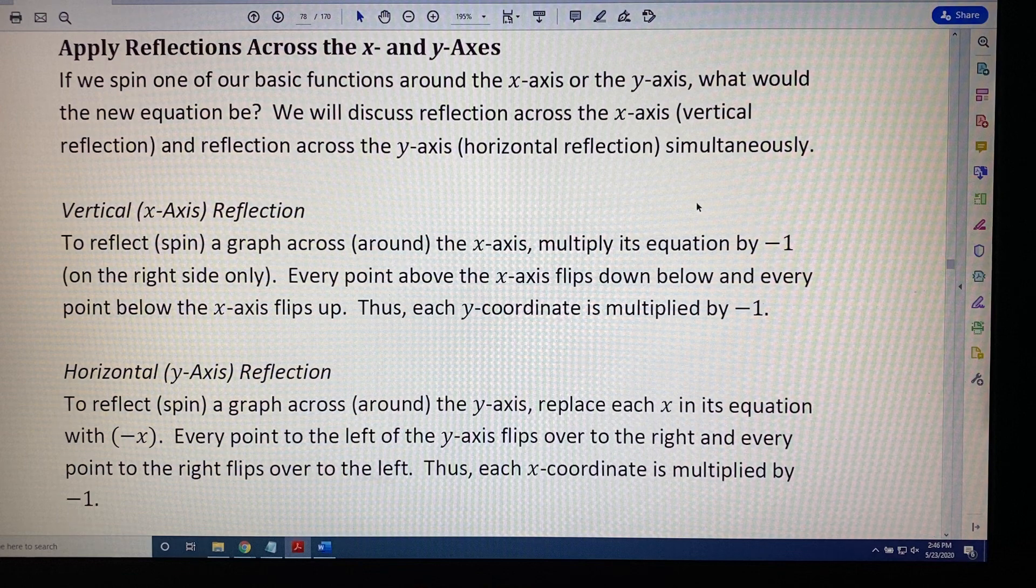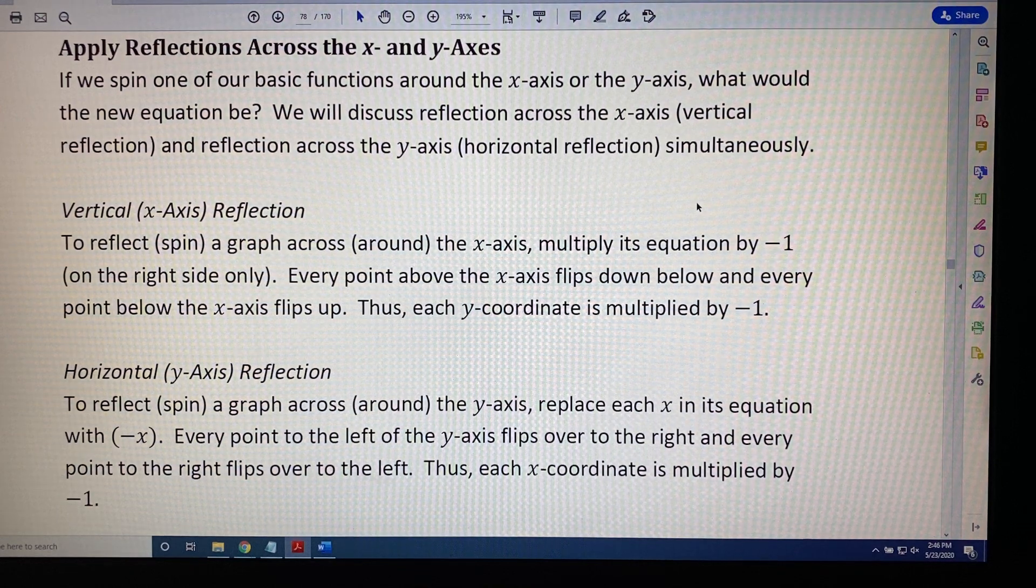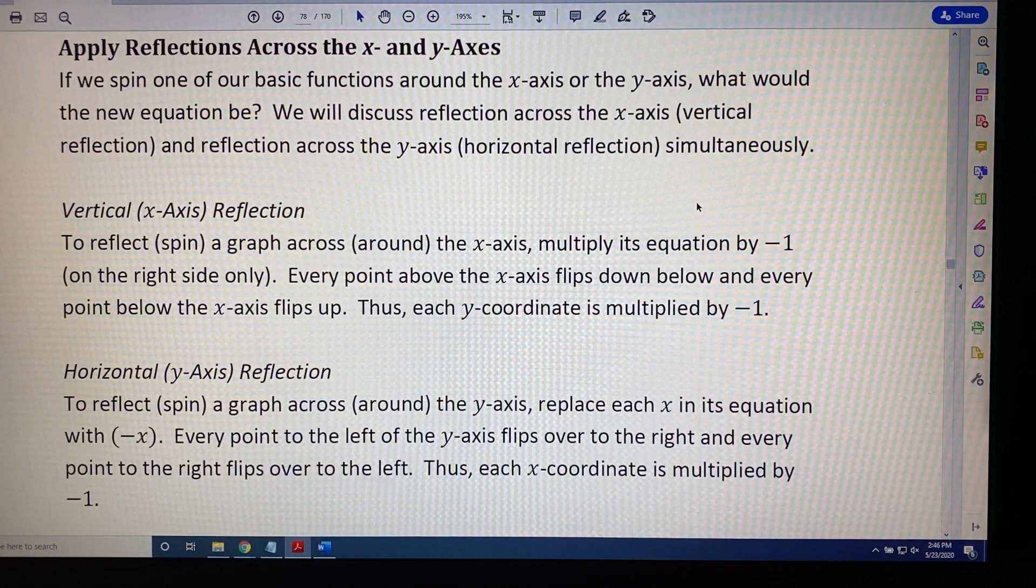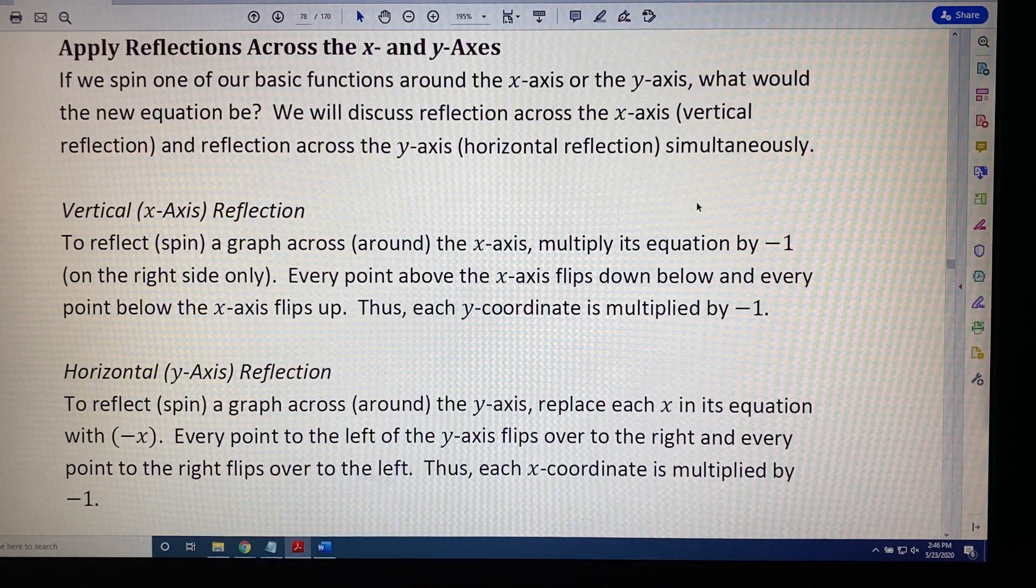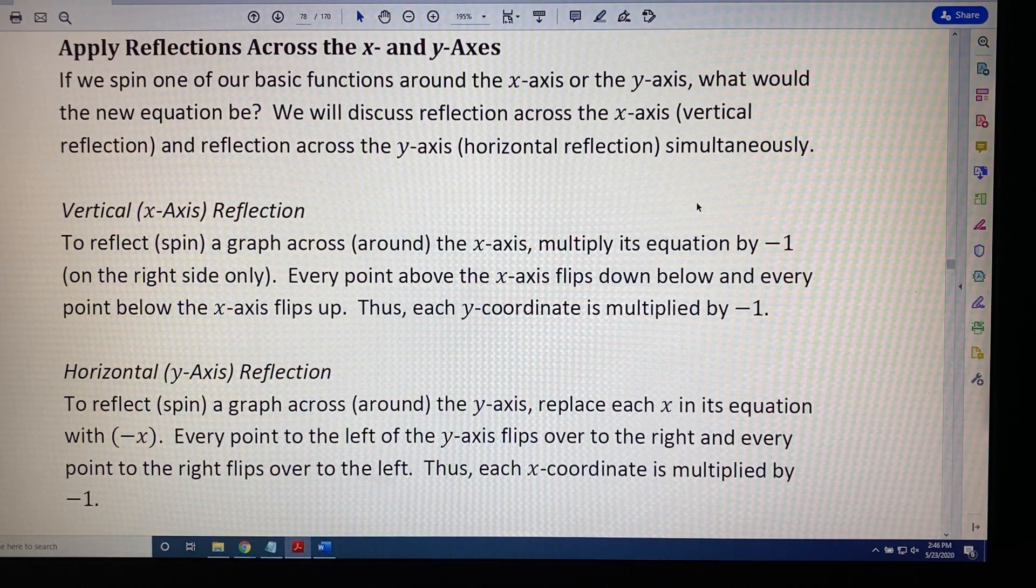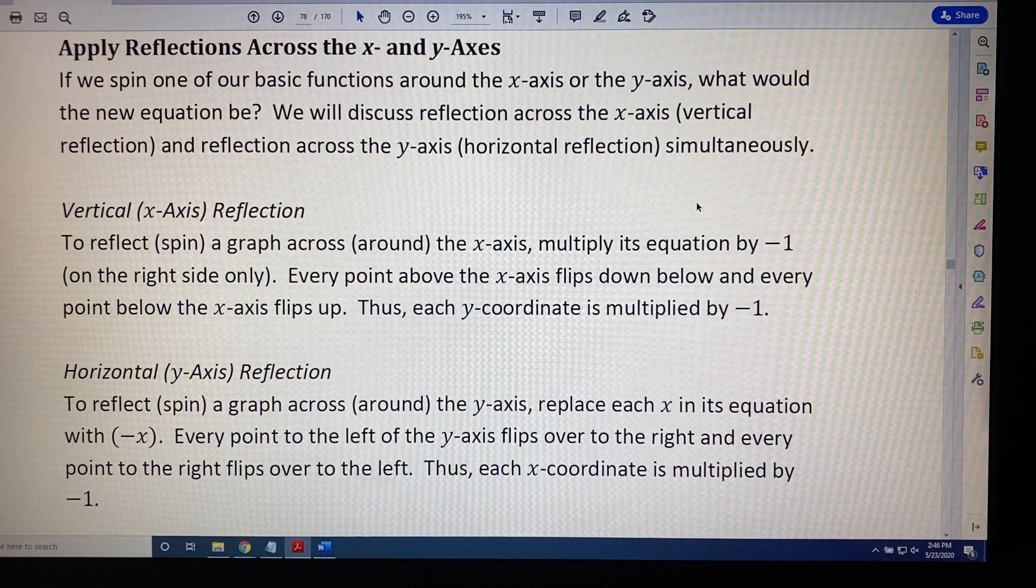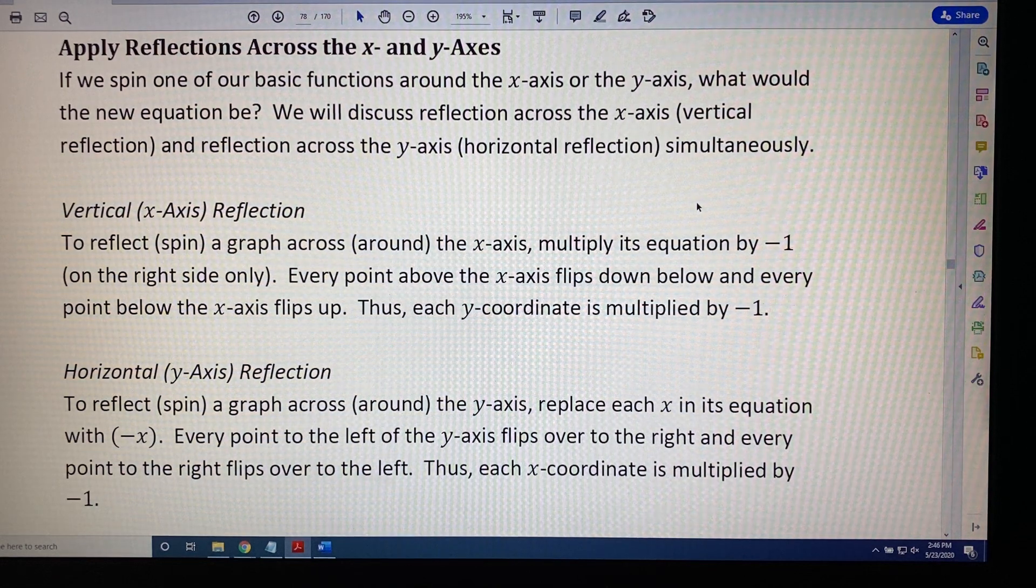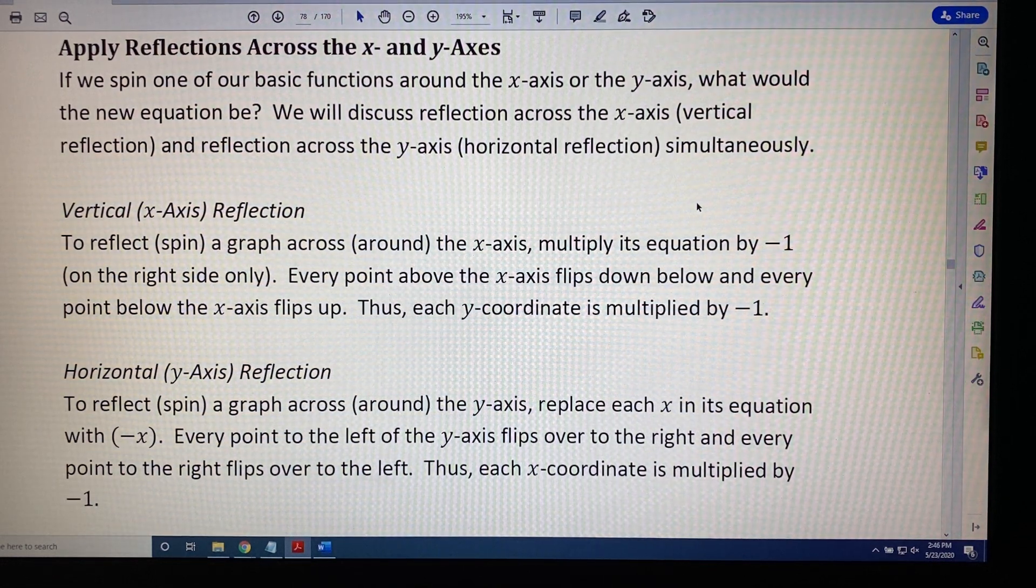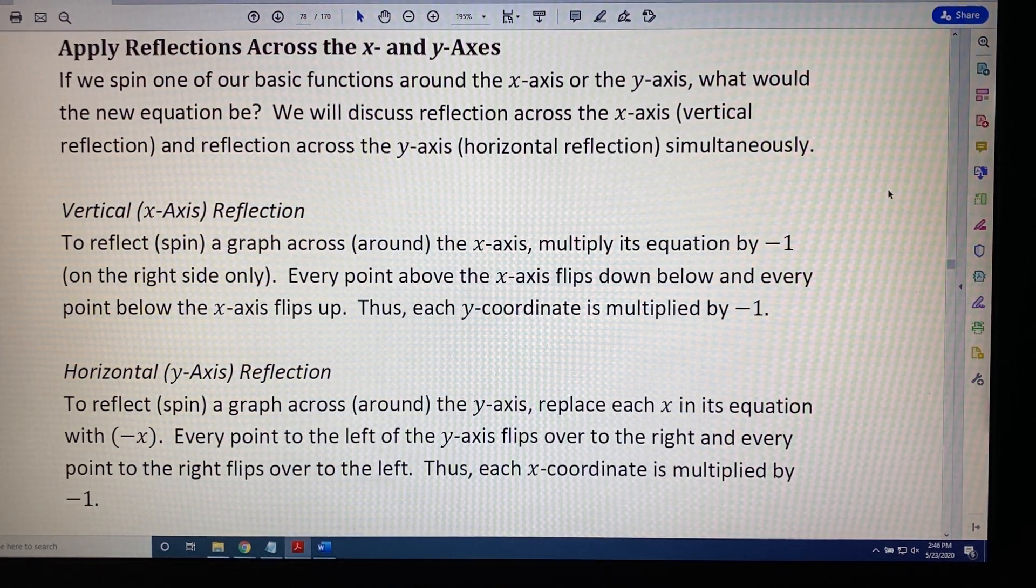Horizontal y-axis reflection. To reflect or spin a graph across or around the y-axis, replace each x in its equation with negative x in parentheses. Every point to the left of the y-axis flips over to the right, and every point to the right flips over to the left. Thus, each x-coordinate is multiplied by negative one.